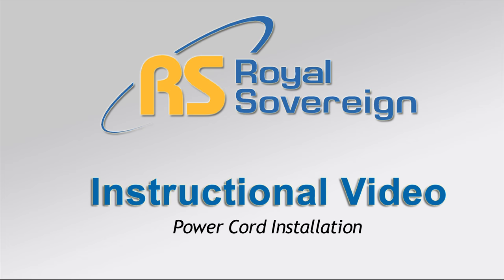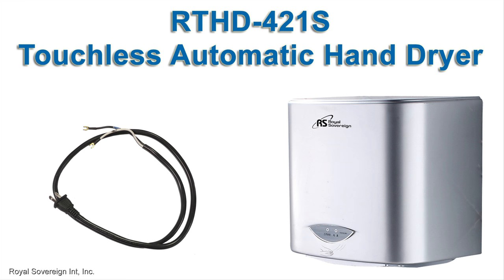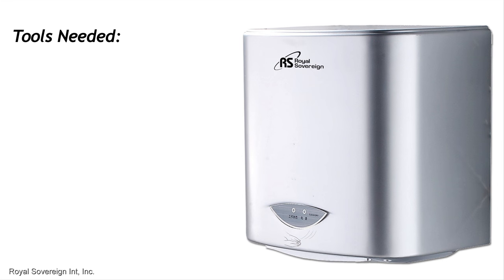Welcome to Royal Sovereign's instructional video on how to install the power cord to the RTHD421S Touchless Automatic Hand Dryer. To install the power cord you will need a Phillips screwdriver. Units should be unplugged during installation process.